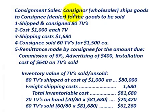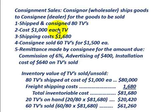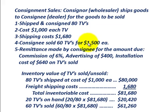The consignor or the wholesaler shipped on consignment 80 TV sets to the consignee or the dealer to sell. The cost that the wholesaler has in each of these TVs is $1,000 each. They paid shipping costs of $1,680 to ship the TVs to the consignee or dealer. The consignee sold 60 of these 80 television sets at a sales price of $1,500 each.